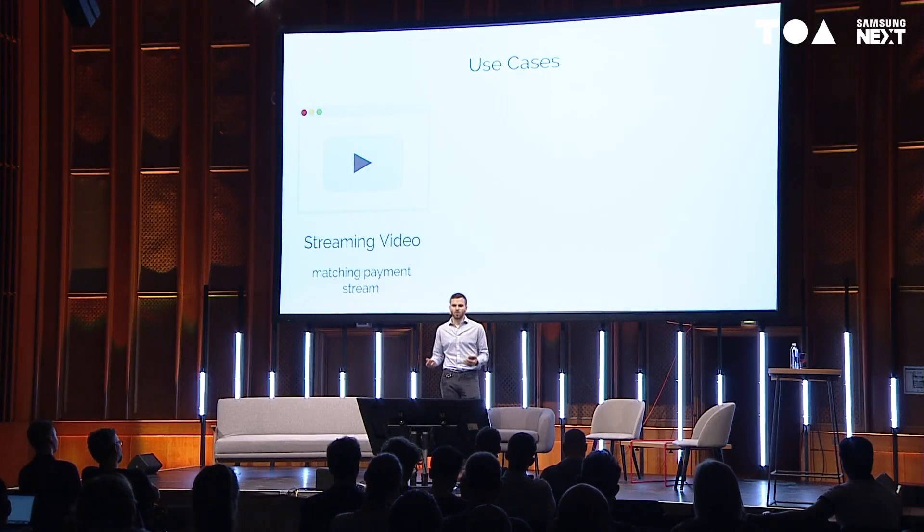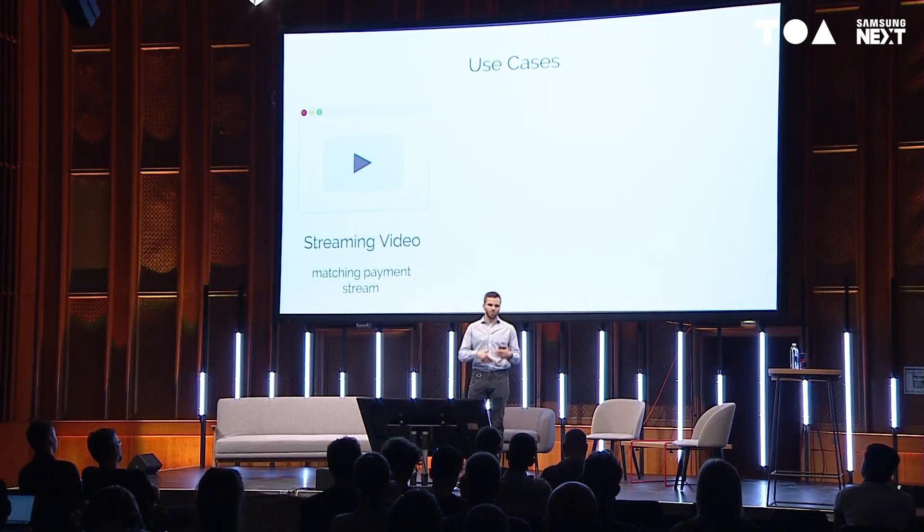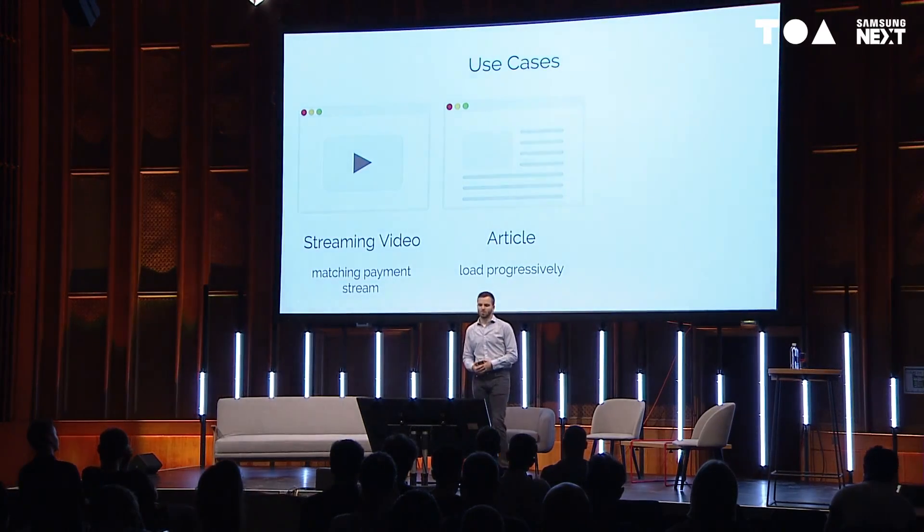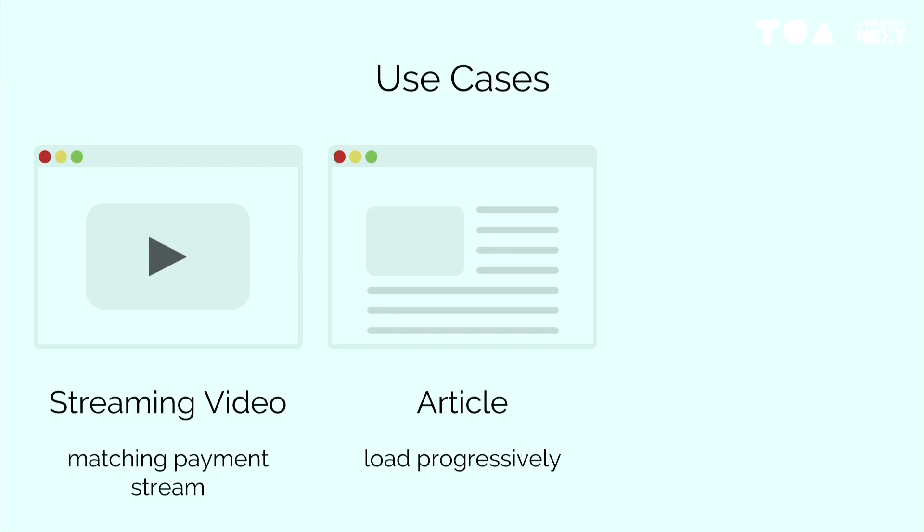What does this look like from the website's perspective? For a streaming video site, you'd set up a payment stream when the user clicks play — or when the page loads — and receive money as the user watches. Depending on the user's money bandwidth, you might send higher or lower resolution video. For an article or blog post it's trickier, but you could progressively load more of the article as the user streams more money while scrolling.